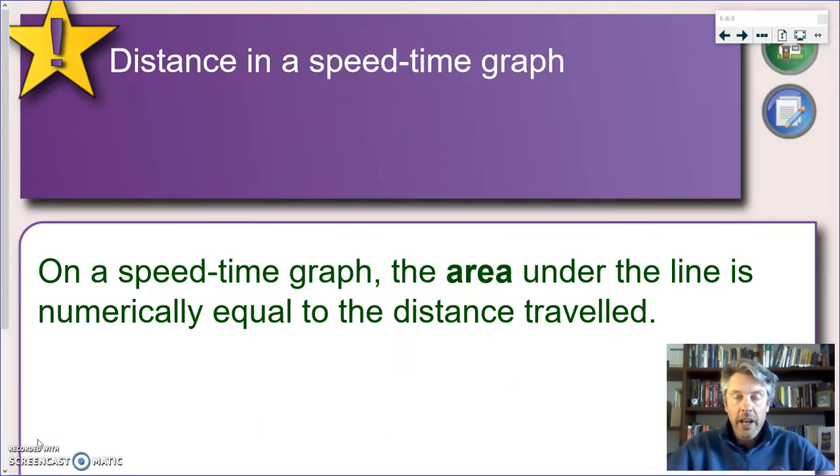So at this point, this result that we have proven in the case of constant speed or constant acceleration can actually be proven for any kind of motion. For that though, you will have to wait in later years in high school when you start a branch of mathematics known as calculus. When you're going to look at derivatives and integrals, you will see that in a speed-time graph, you can always look at the area under the graph and that will give you the distance traveled. This is the rule. This is what we have just found. This is very, very important. Because now we know that if we have a speed-time graph, the area under the line that represents the motion is numerically equal to the distance traveled.